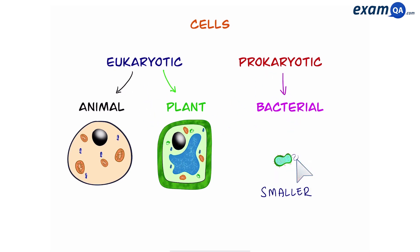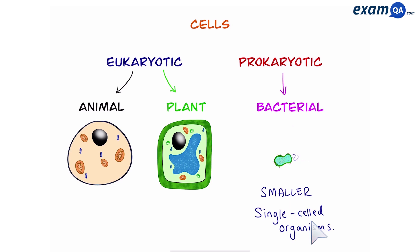The next difference is that bacterial cells are much smaller than animal and plant cells. Also, they are only found in single-celled organisms, whereas animal and plant cells are found in multicellular organisms.